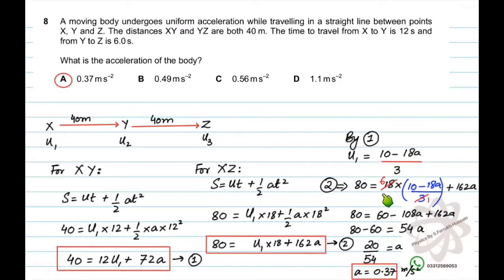After completing this, you will substitute the value of u1 into equation 2, and then you will simplify it until you get the value of acceleration, which is 0.37 meters per second squared.